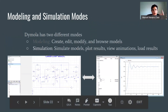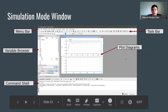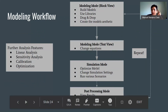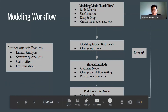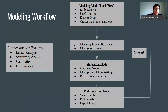There are two different modes. Think of the modeling part where you're plugging everything together and setting parameters, and the simulation part where you're seeing your results and all the signals. In the modeling block, you build models, use the libraries, drag and drop things, and create the model's aesthetic. Then you go to the text view to change equations and parameters. Then in simulation mode, you optimize the model, change simulation settings, and run various scenarios. Finally, in post-processing mode, you view results, plot signals, and explore results. There are further analysis tools such as linear analysis, sensitivity analysis, and calibration and optimization.